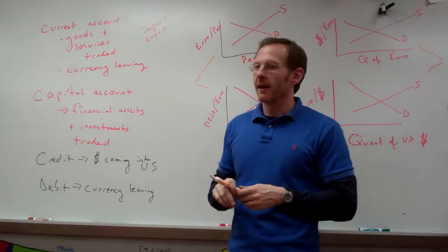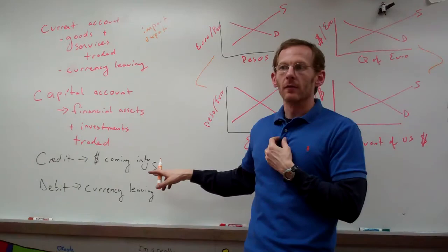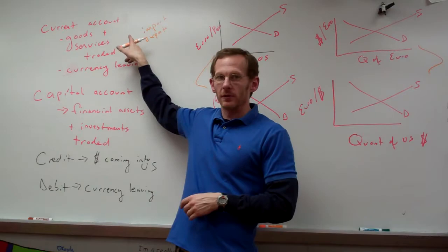If Germany is buying our telephones — what we've manufactured — then money is coming in, which would be a credit to the balance of payments, and we're sending them our phone. So that would be a current account export.